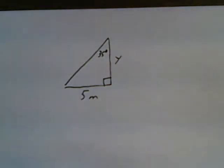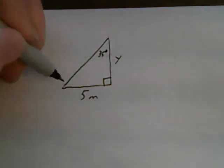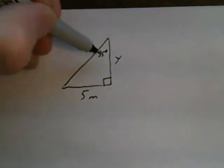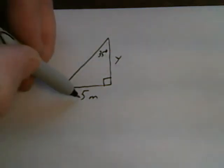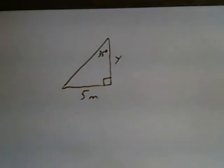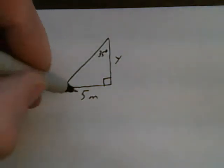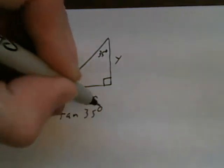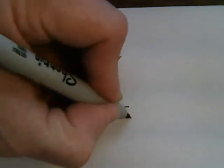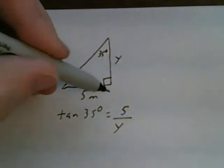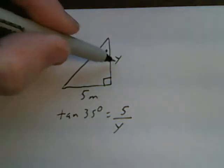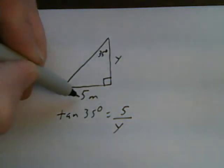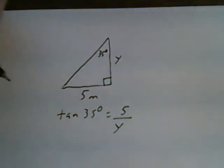Now, in this case, I can still use tangent because, with reference to 35 degrees, my opposite side is 5 and my adjacent side is Y. So I'll set up the relationship: tan 35 degrees equals 5 over Y. And I put the Y on the bottom because the Y is the adjacent side. I put the 5 on the top because the 5 is the opposite side.